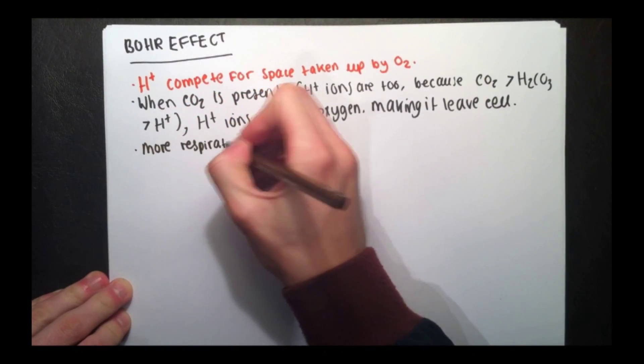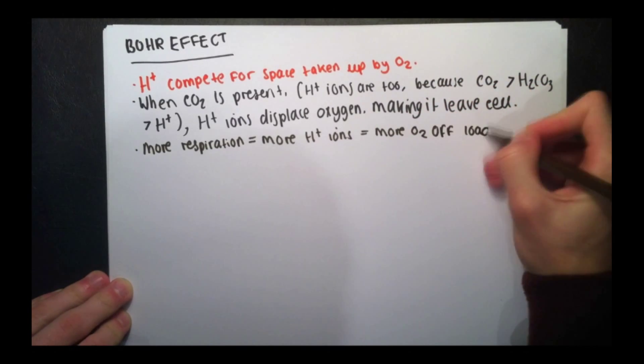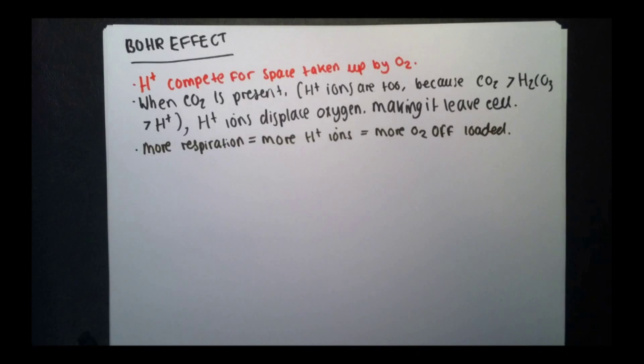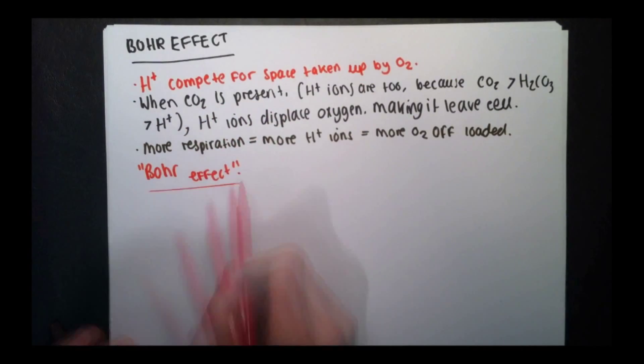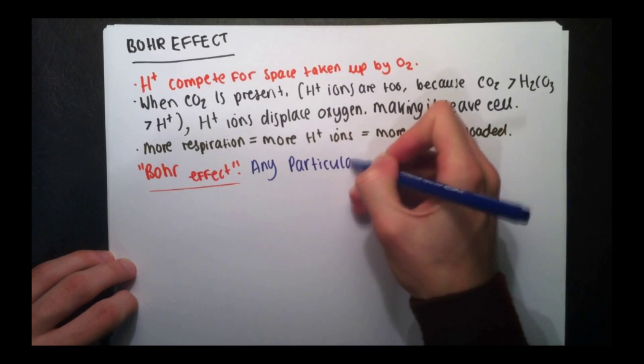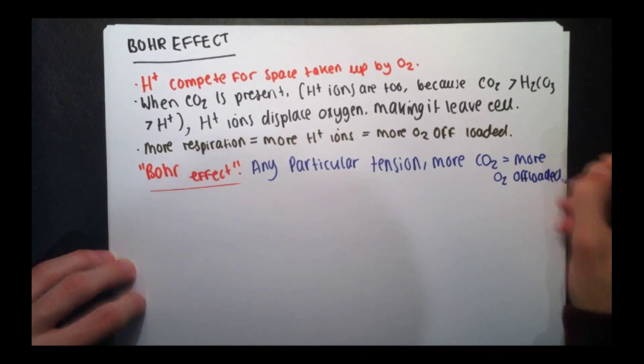So basically, the more respiration taking place means more hydrogen ions are going to be produced. This causes more oxygen to leave the cell. So this means that at any particular tension or partial pressure of oxygen, the more CO2 produced means the more oxygen knocked off into the tissues.